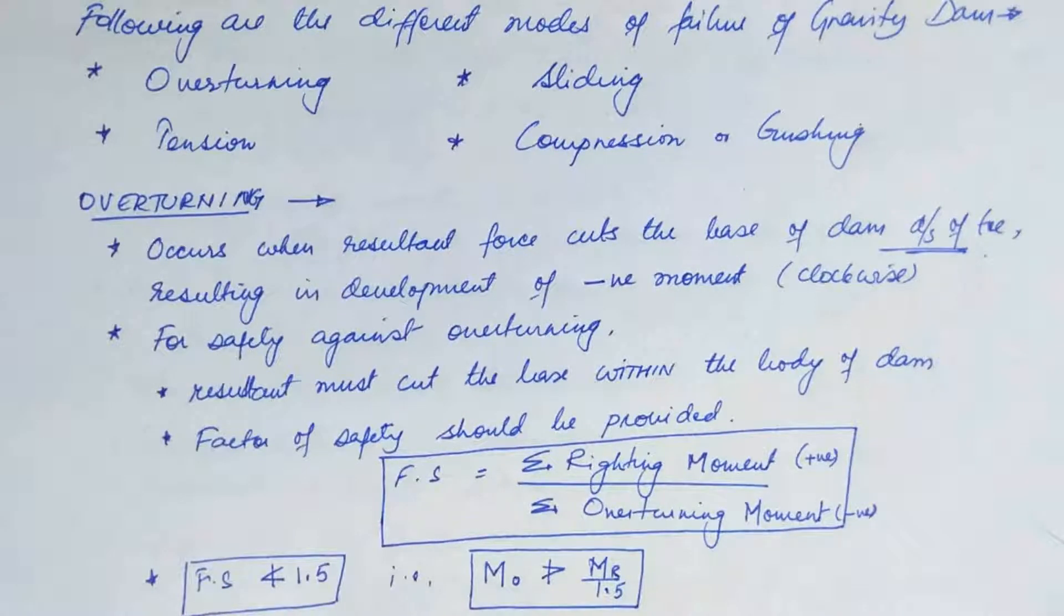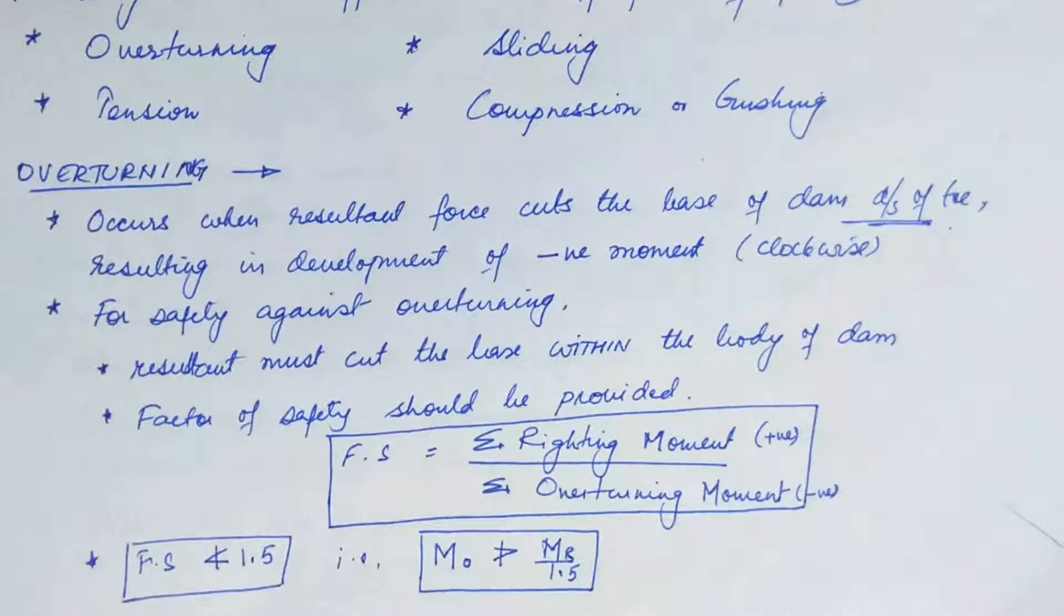Now let's see the condition when a dam can fail by overturning. The overturning of dam section takes place when the resultant force at any section cuts the base of the dam downstream of the toe. And in that case, the resultant moment at the toe becomes clockwise. Clockwise means negative moment is developed. So, for safety against overturning,